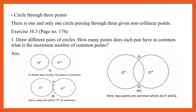Circle through 3 points: There is one and only one circle passing through 3 given non-collinear points. If we take 1 point or 2 points, we can see that an infinite number of circles can be drawn passing through 1 point or 2 points. Based on this, we are going to see exercise 10.3.